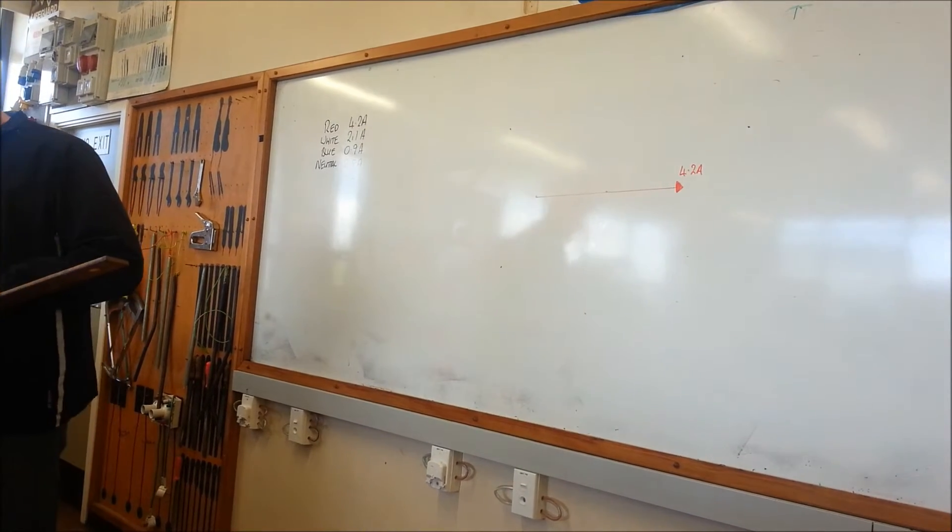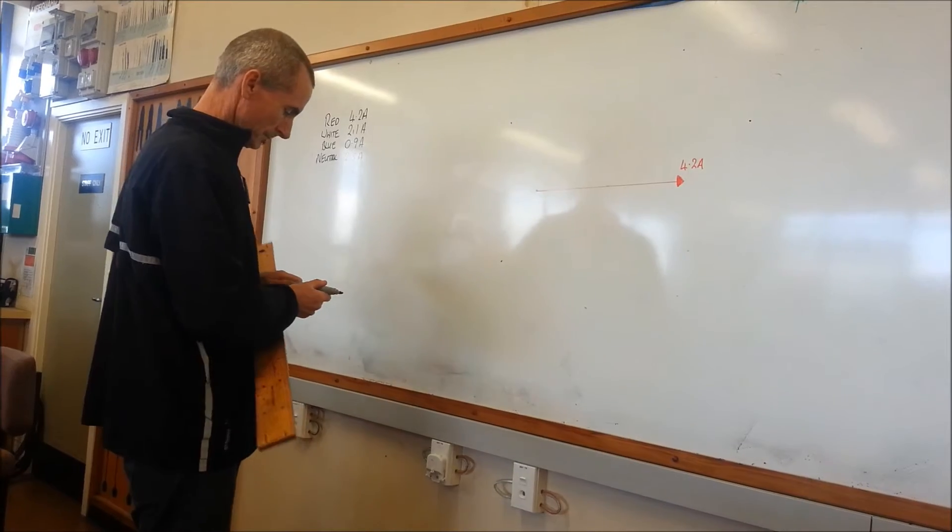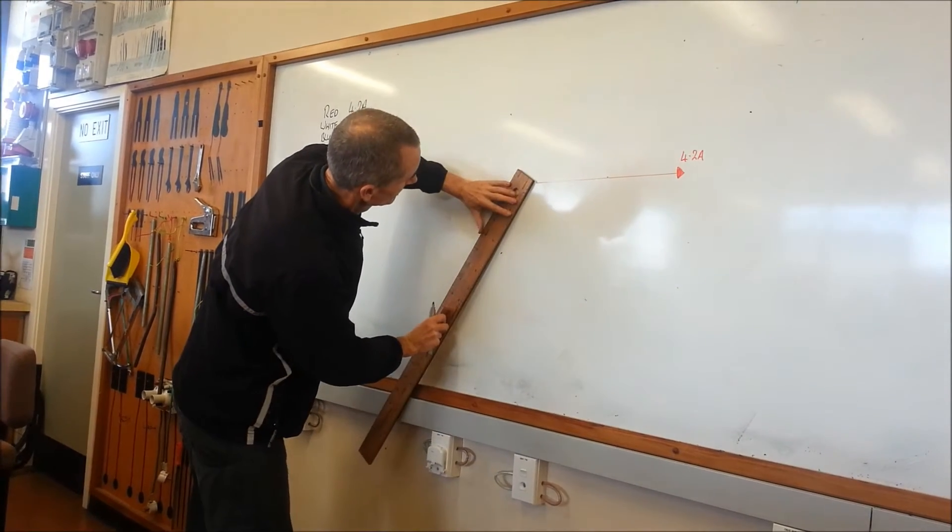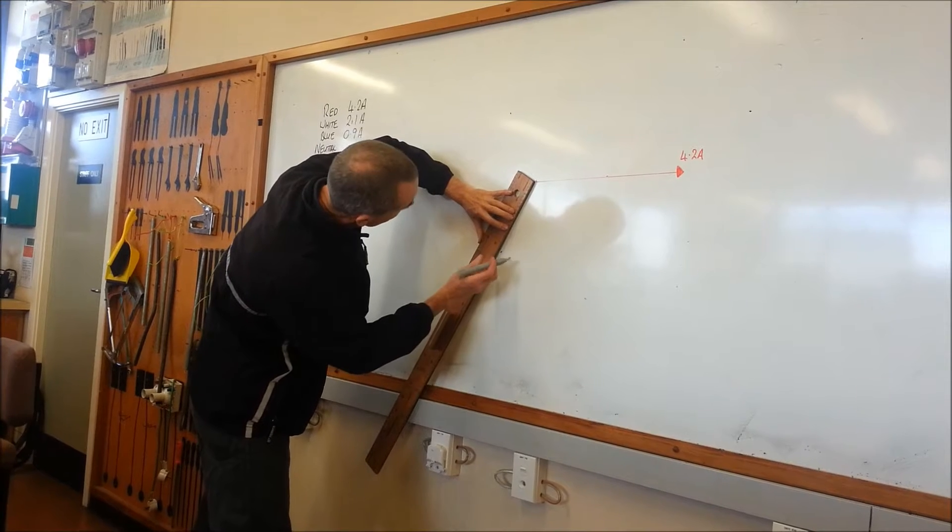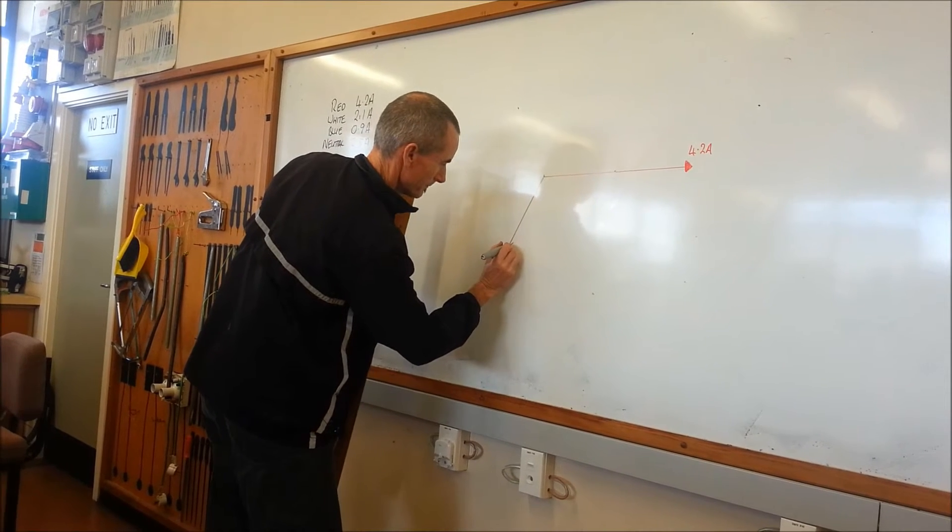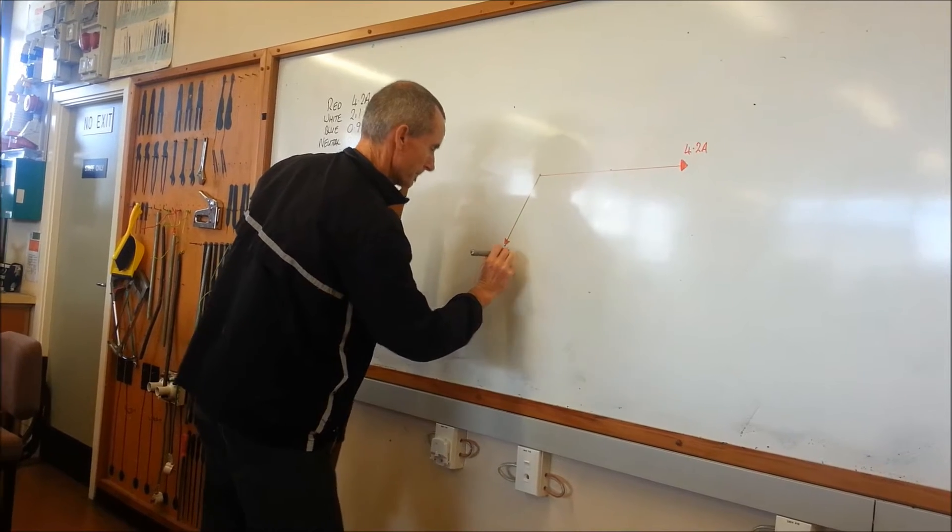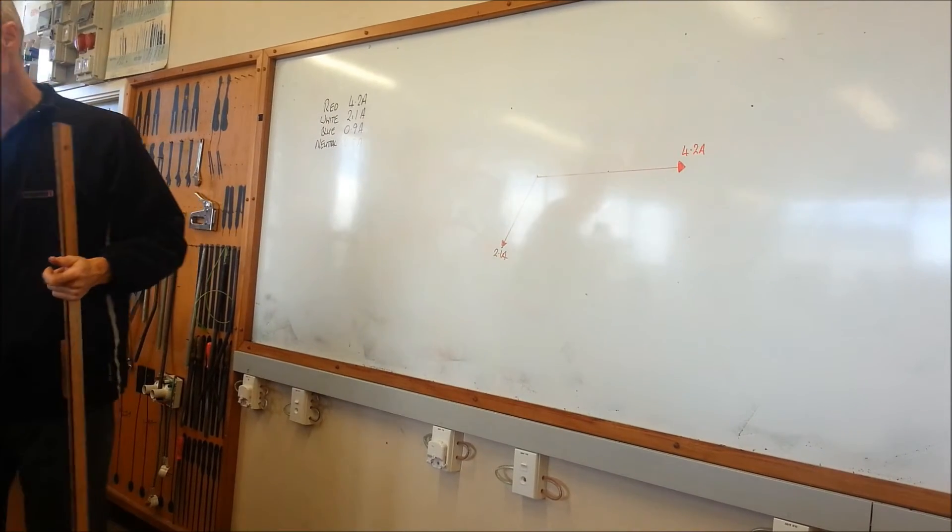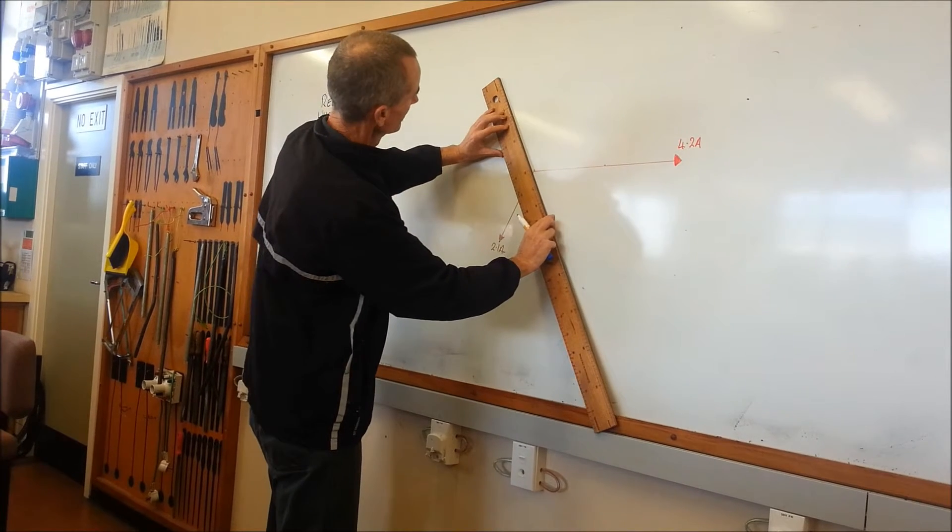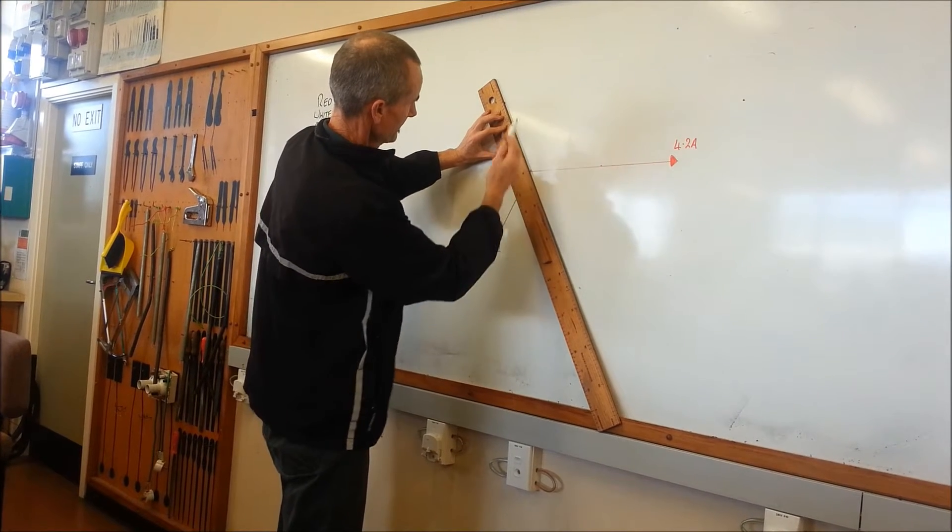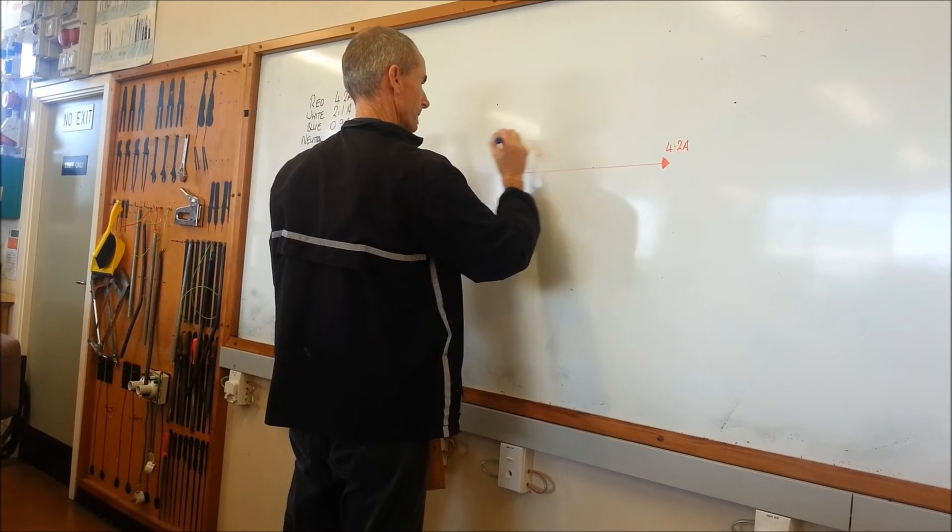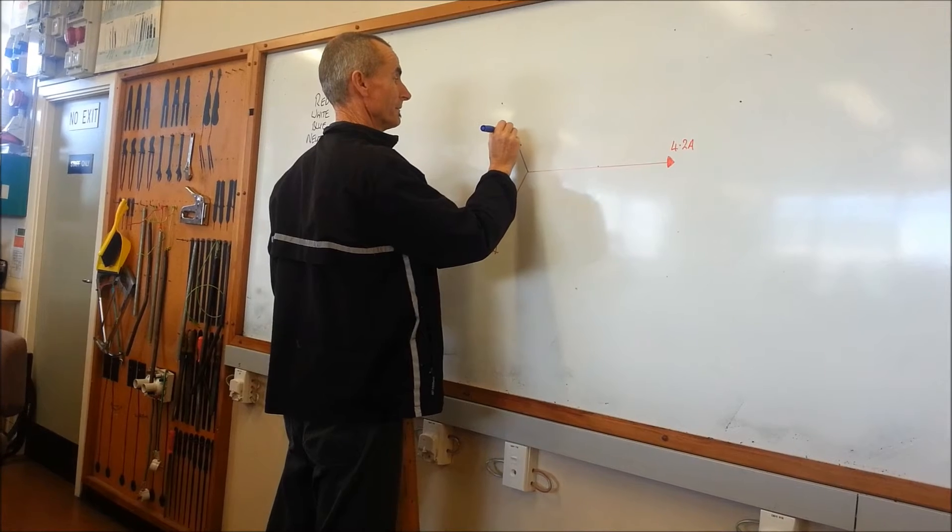White, 2.1 amps. Blue, 0.9 amps. So all I've drawn so far is the information that we've gathered from the meters.